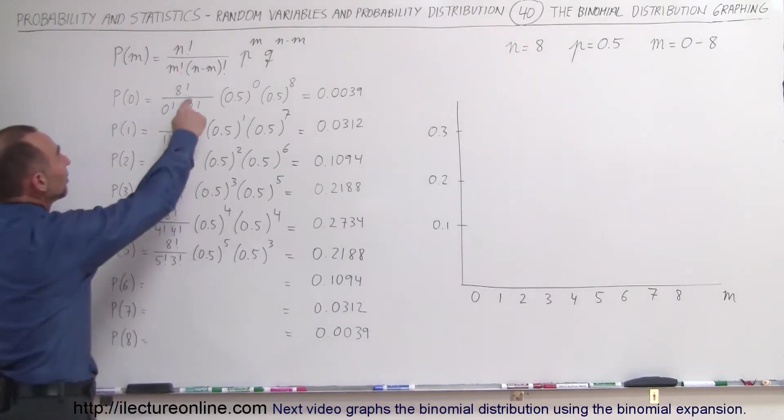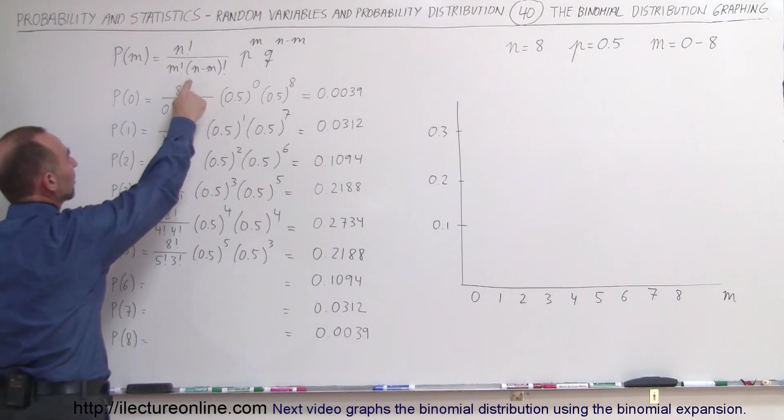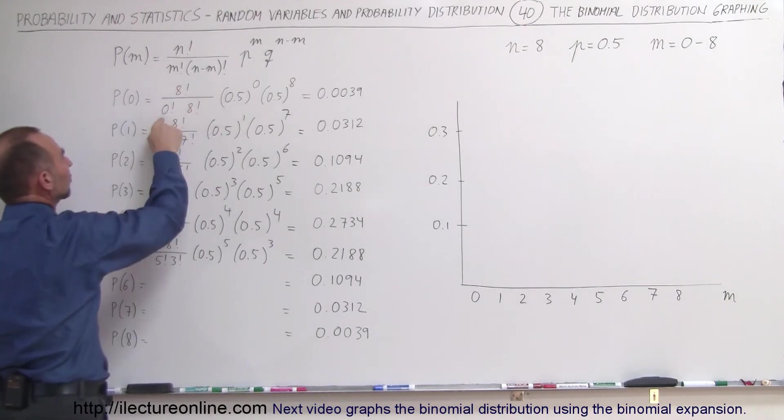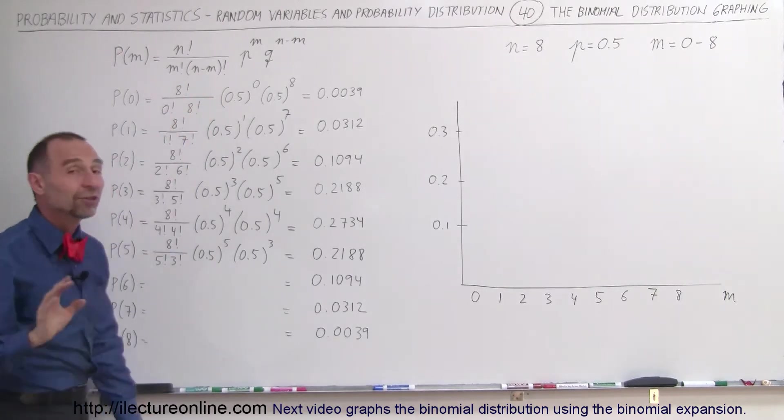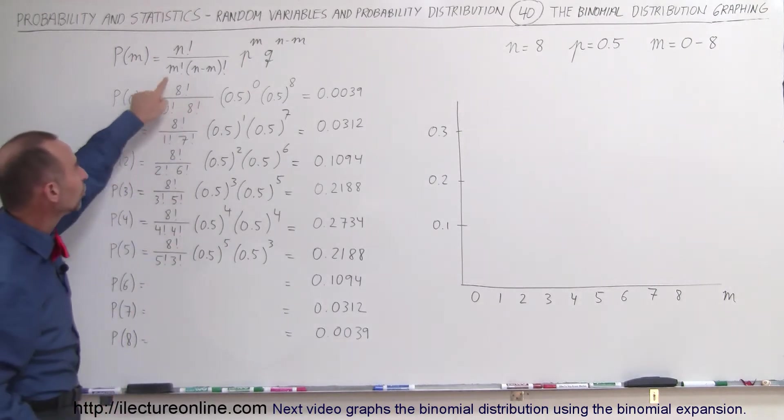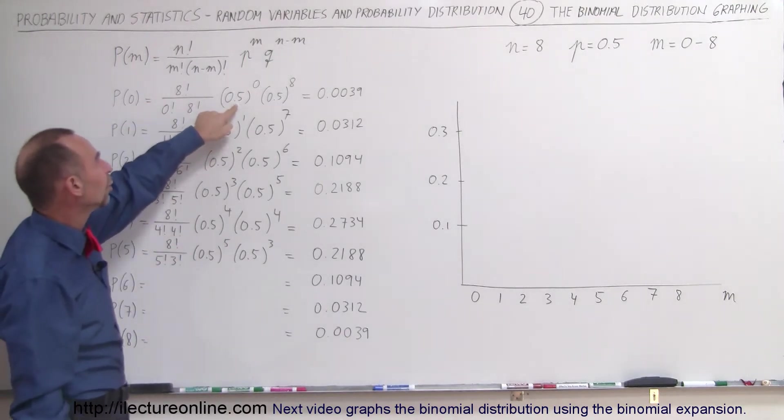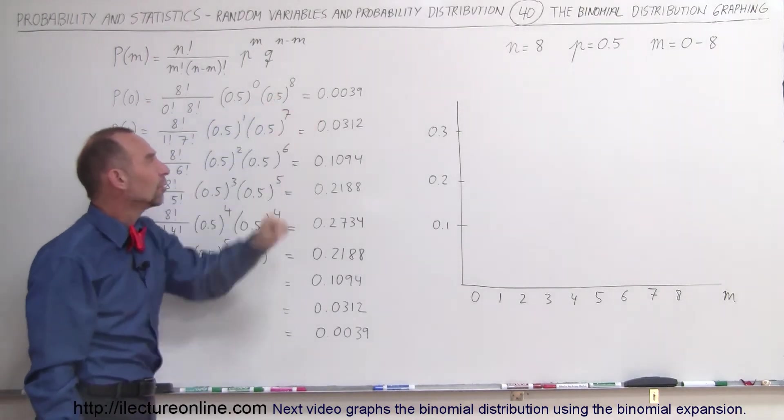In each case, n is equal to 8 because there's 8 trials, so we have 8 factorial in the numerator. For m equals 0, we have 0 factorial and 8 minus 0, which is 8 factorial. Of course, 8 divided by 8 is 1, and 0 factorial by definition is equal to 1, so this whole thing becomes 1, and this simply becomes 0.5 to the 8th power, which is 0.0039.